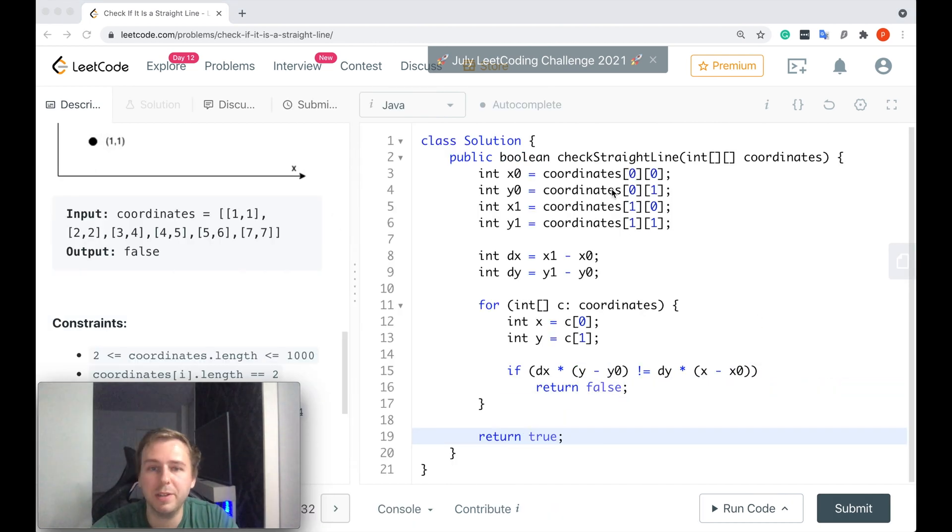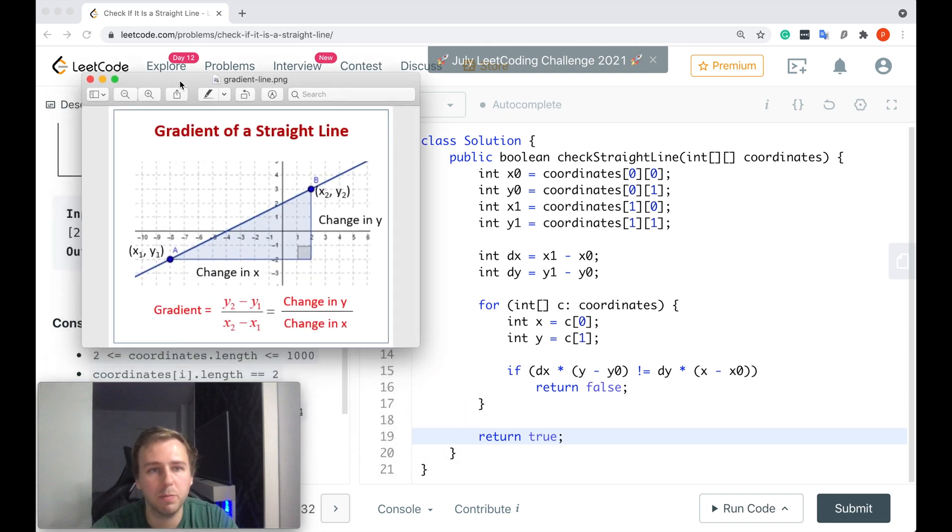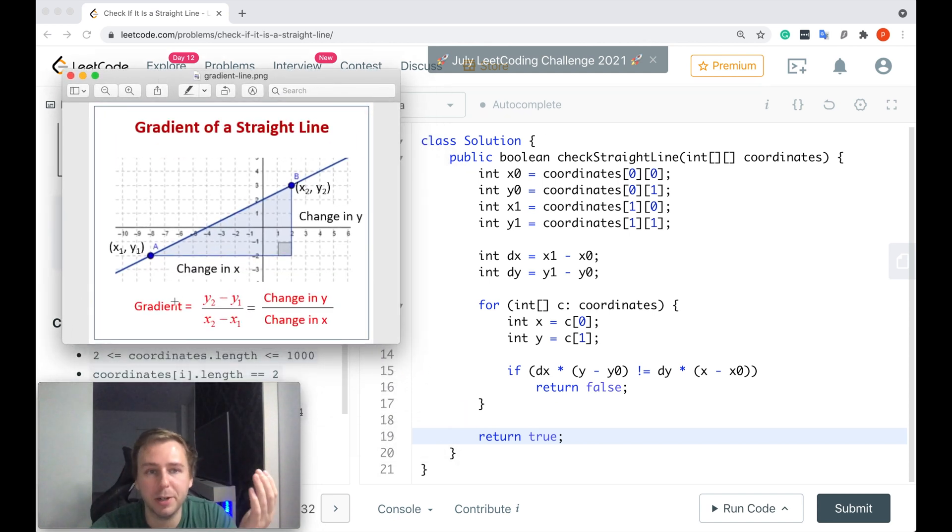Okey-dokey my little coders, here's our code. Let me just put the picture here. So gradient - to calculate the gradient for the first two points we will need to first of all define two x values (x0 and x1) and two y values (y0 and y1) to use this formula. Then we can calculate the change in y and change in x. So delta x is change in x, delta y is change in y. Delta x equals x1 minus x0, same stuff as here, and delta y equals y1 minus y0, same thing as here.